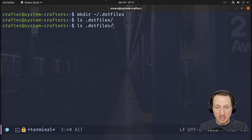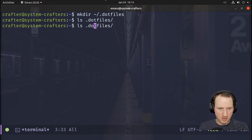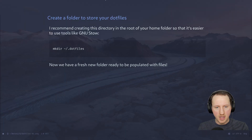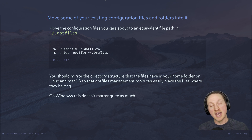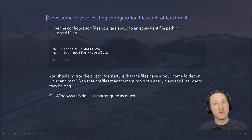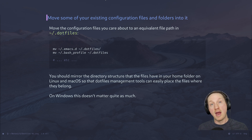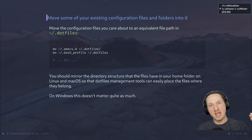I've now created my brand new dot files folder — it's empty right now because we just created it, but we're going to populate it with files. What we need to do is take our existing configuration files for things we care about and move them into this dot files folder. I'm an Emacs user so I have a .emacs.d folder I definitely want to move over. I'll also move over my shell config — in Ubuntu that's .bashrc — and I use MPV for watching videos, so I'll use that as an example of a nested folder layout.